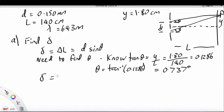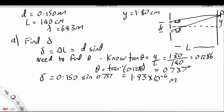So, now we have delta is 0.150, which is D sin of 0.737. And that gives us 1.93 by 10 to the minus 6 meters. And we'll continue over the page.